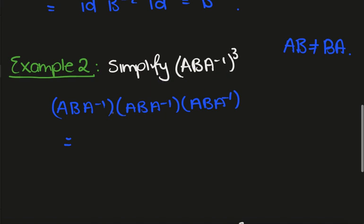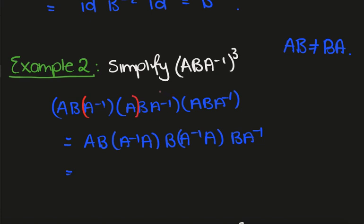So what we have to do is actually write it out like this, and then what we see is that we'll have ABA inverse A times BA inverse A times BA inverse. I've just collected the parentheses here and here.